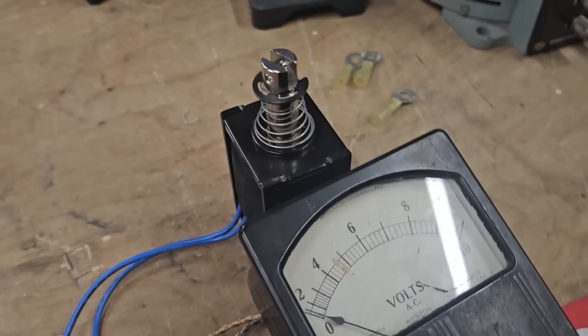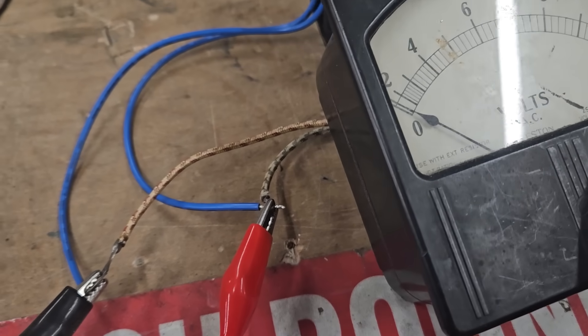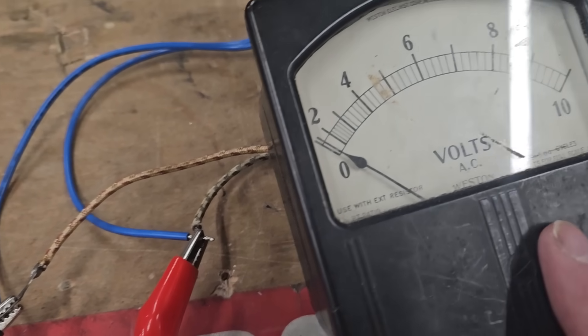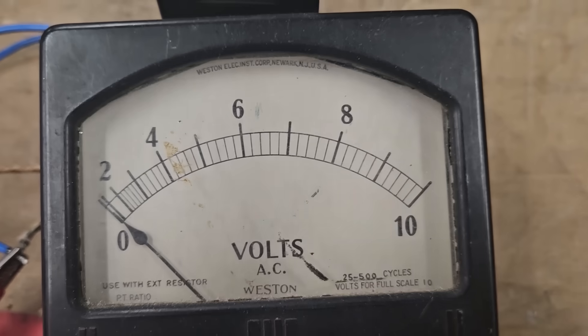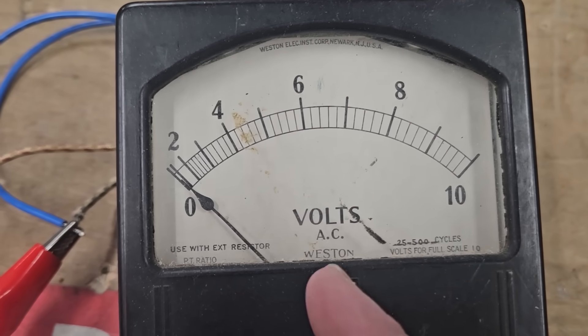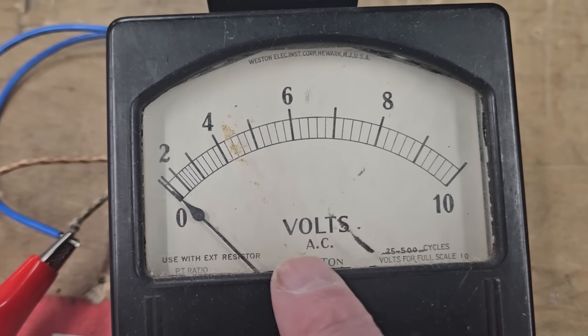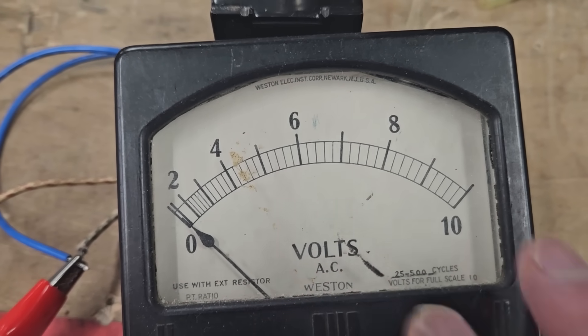You can do this at home! So, I have a state of the art, it's probably 80 years old. This is an old Westin, just a little 10 volt meter. Simple. And it wants volts AC, but we're not giving it volts AC. We're doing fine.